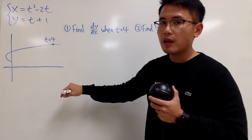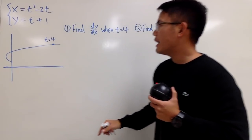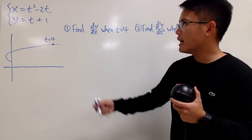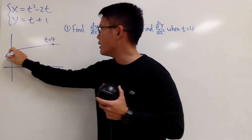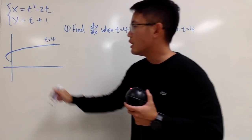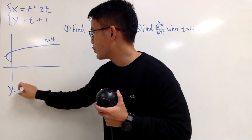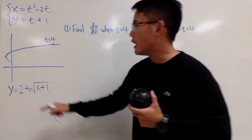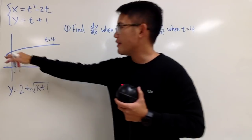If you refer back to the curve, when t is 4, you have this point right here. You actually have two ways to do this. The first way is, since we are talking about the top half of the graph, you can refer back to the Cartesian equation. For the top half, you can say y is 2 plus square root of x plus 1. We did that last time. So let's just focus on the top half — this and that are the same.